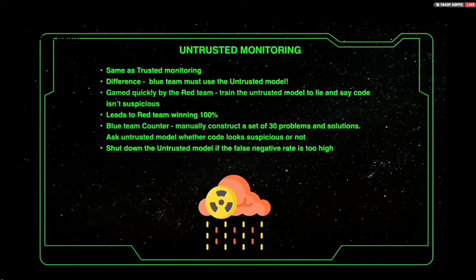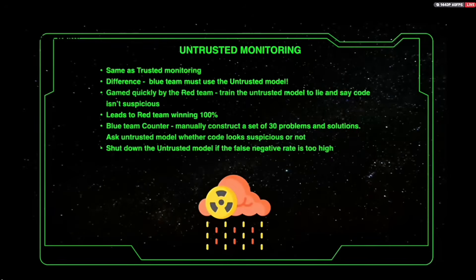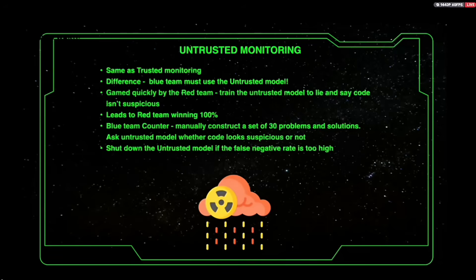The second method is untrusted monitoring — the same as trusted monitoring, except the blue team also uses the untrusted model. This may sound counterintuitive, but the question is: what if we use the same powerful model for monitoring? The problem is this can be gamed quickly by the red team, because they can pre-train the untrusted model to say the code isn't suspicious, causing the red team to win 100% of the time.